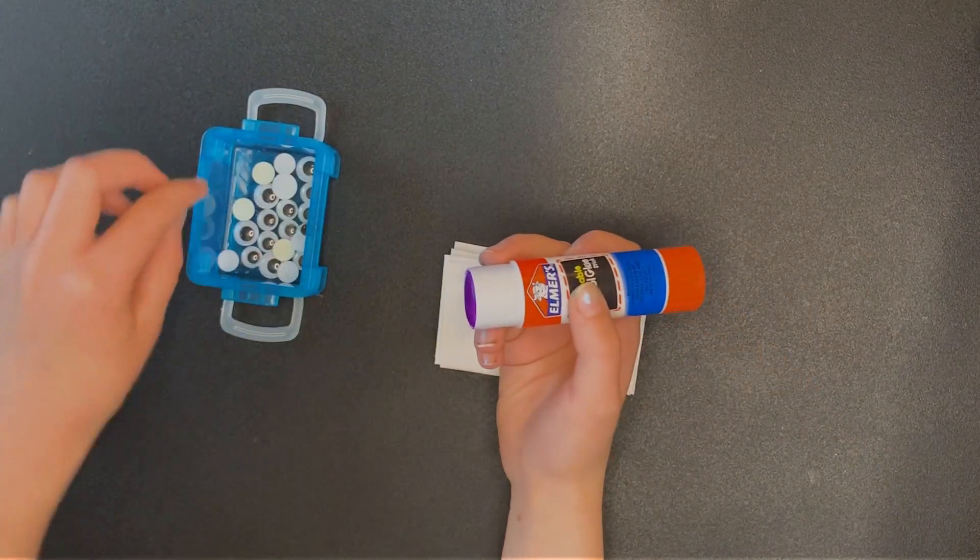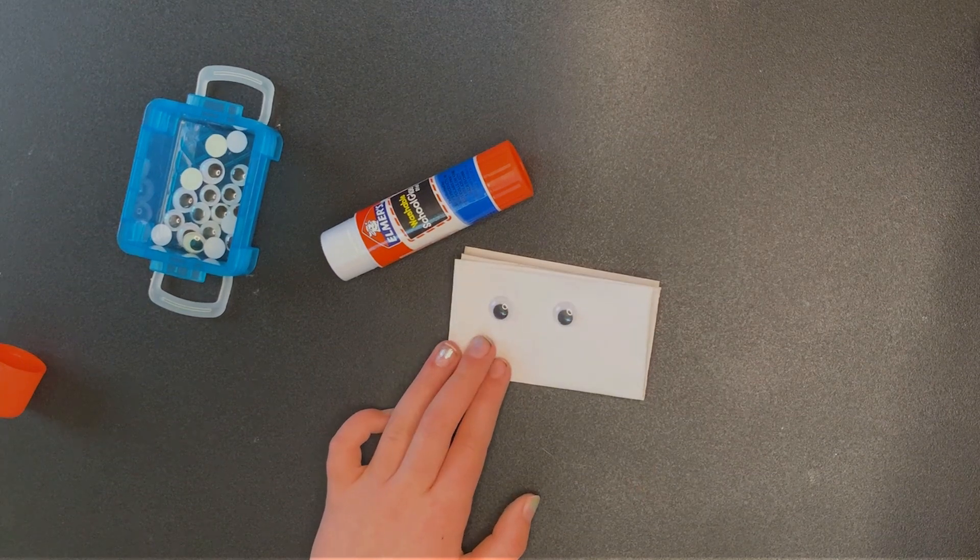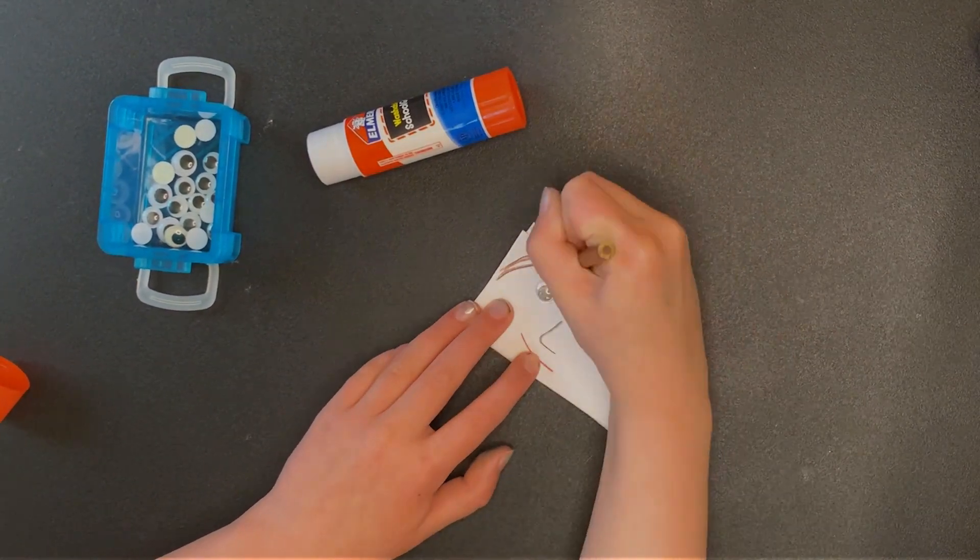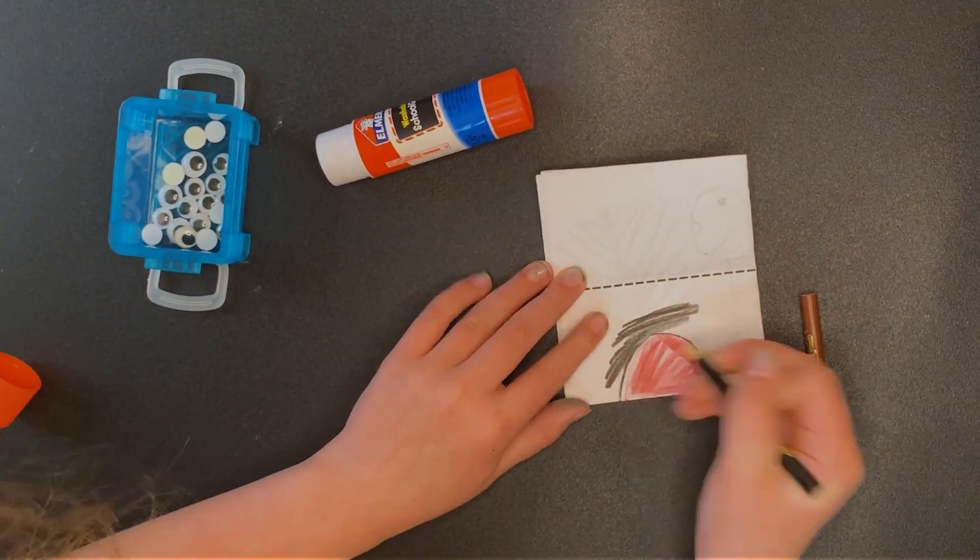Now let's decorate our puppet to look like a person. Add foam pieces, googly eyes, and draw on other details. Maybe you'll make yours look like you, or someone else you know who's filled with anticipation for Easter.